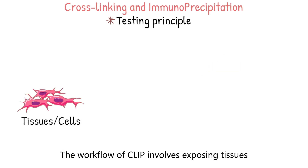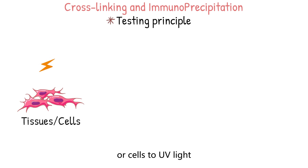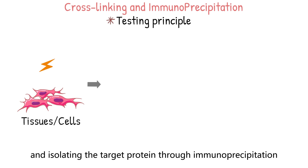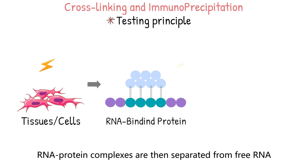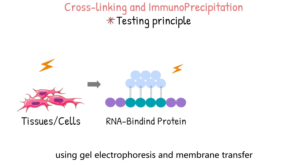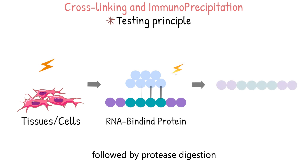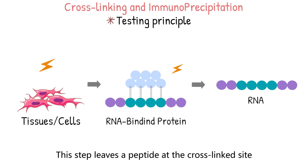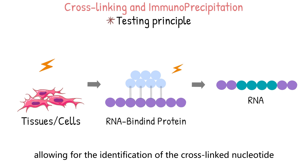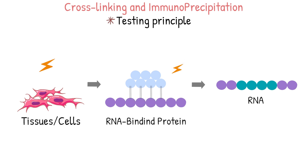The workflow of CLIP involves exposing tissues or cells to UV light, lysing crosslinked cells, and isolating the target protein through immunoprecipitation. RNA-protein complexes are then separated from free RNA using gel electrophoresis and membrane transfer, followed by protease digestion to remove proteins from the complexes. This step leaves a peptide at the crosslinked site, allowing for the identification of the crosslinked nucleotide.